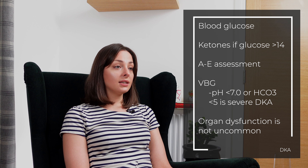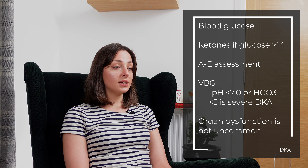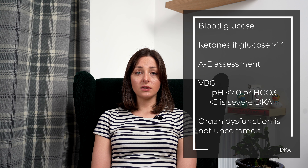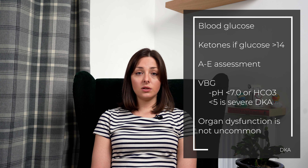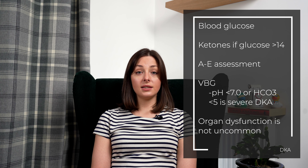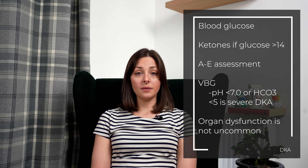Take a venous blood gas to check their pH and their bicarbonate levels. Severe DKA is indicated by a pH less than 7.0 or a bicarbonate less than 5. Other signs of severe DKA are signs of organ dysfunction such as sats less than 92%, blood pressure less than 90 systolic, or altered mental state, seizures or coma.